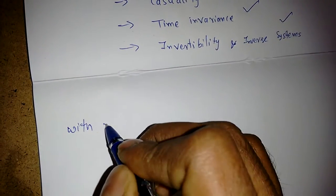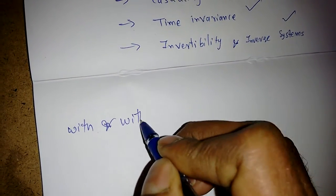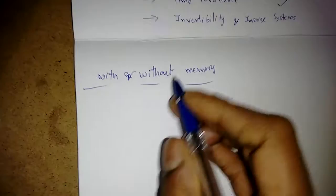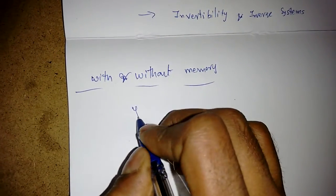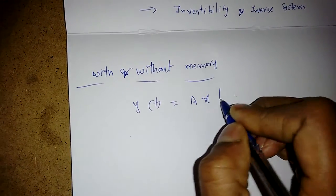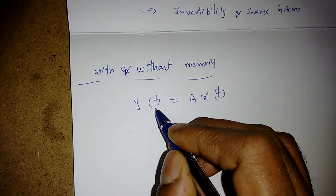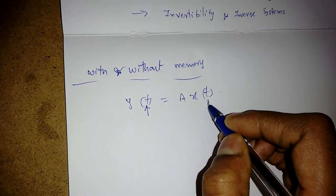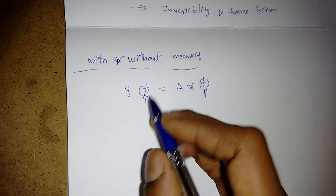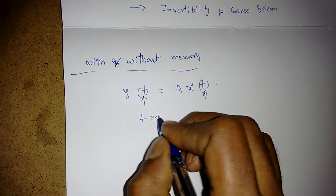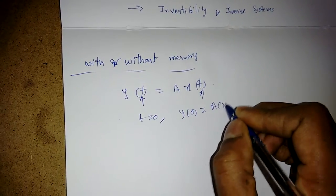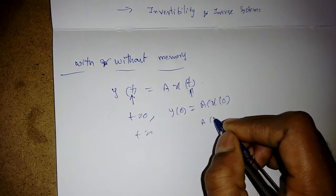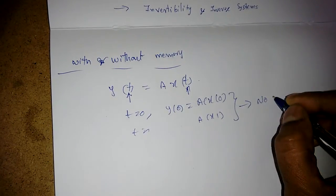Let's start with memory. Suppose an equation is given like y(t) = a·x(t). The present output depends only on the present input. At t=0, y(0) = a·x(0); at t=1, y(1) = a·x(1). This system has no memory.